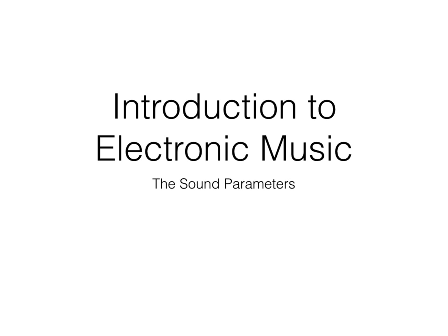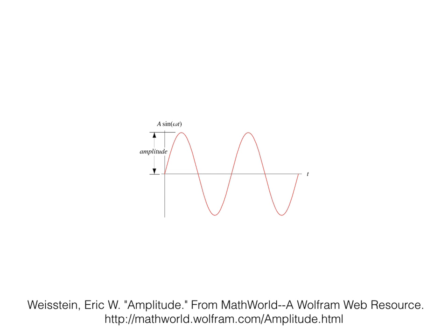Physical parameters and perceptual parameters are different. The most basic parameter is amplitude. Amplitude is the intensity of a sound. We measure amplitude in decibels. We perceive amplitude as volume, or how loud or soft a sound is.